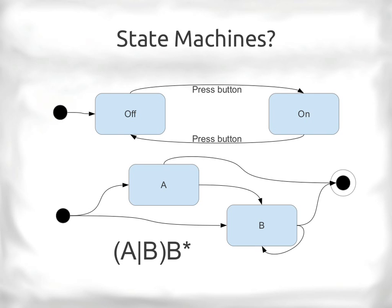Let's review what we mean by state machines. Think of a simple electronic device with an on and off state and one button — a one-button toggle. We start in the off state. Press the button, it triggers an effect, and you go into the on state. Press the button again and you go back to off. Simple: an initial start state and a simple state machine.